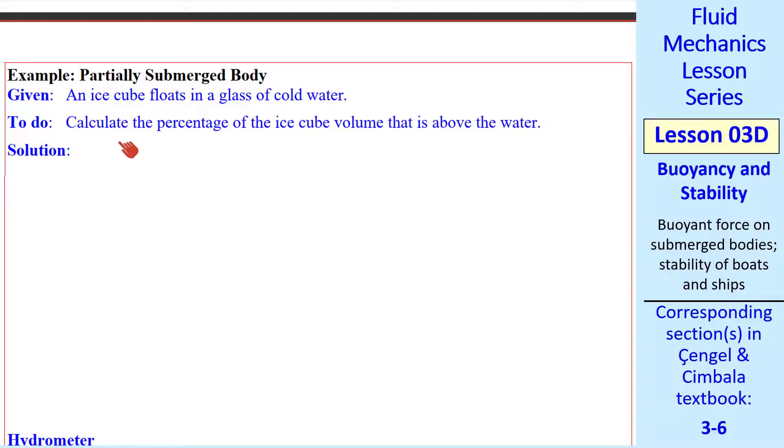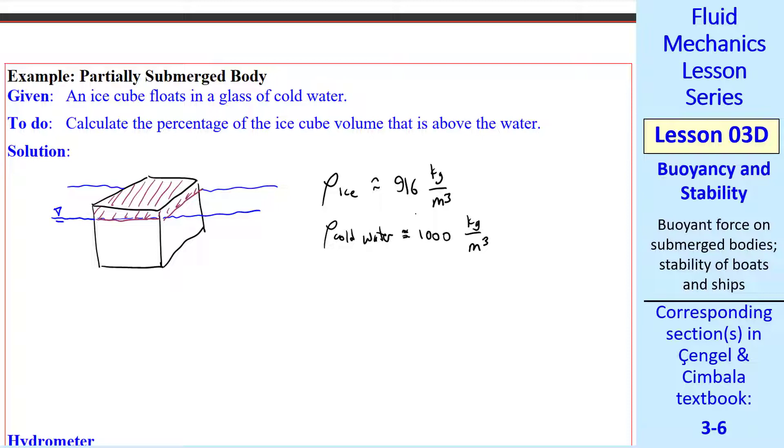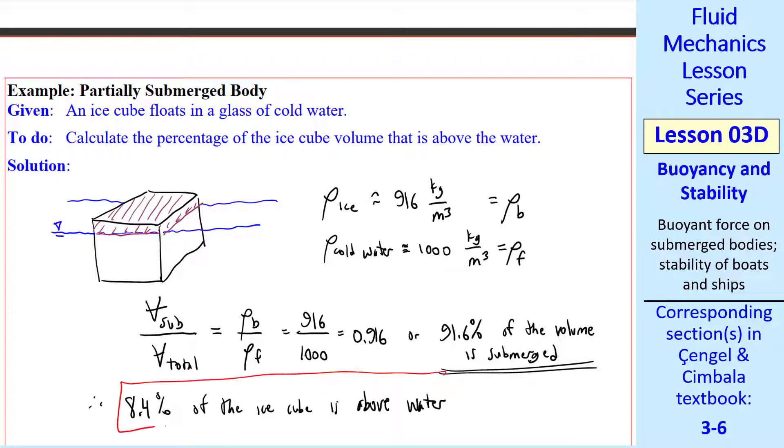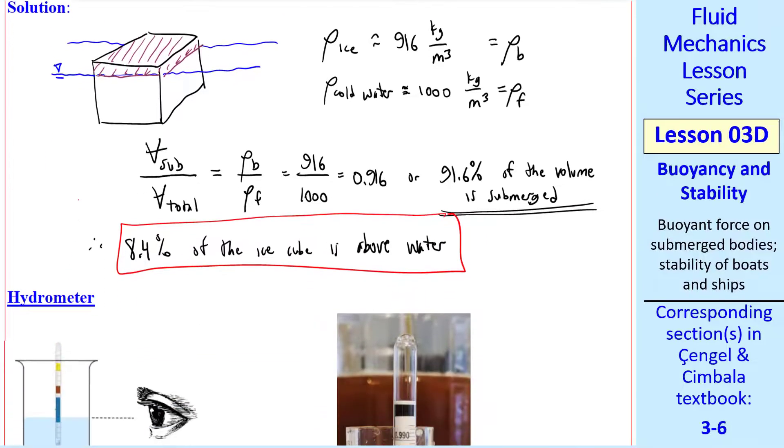Let's look at ice as a common example. An ice cube floats in a glass of cold water. We want to calculate the percentage of the ice cube volume that is above the water. Well, let's sketch our ice cube and the water surface. This portion that's above the surface is what we're talking about. The other part of the ice cube is totally submerged. We look up the densities. The density of ice is about 916 kg per cubic meter. And the cold water density is about 1,000. This is ρ_body. This is ρ_fluid. Our equation is V_submerged over V_total is ρ_B over ρ_F, which gives us 0.916, or 91.6%. So 91.6% of the volume is submerged. Therefore, only about 8.4% of the ice cube is above water. We have similar results for floating icebergs, where only about 10% of the iceberg is above water.